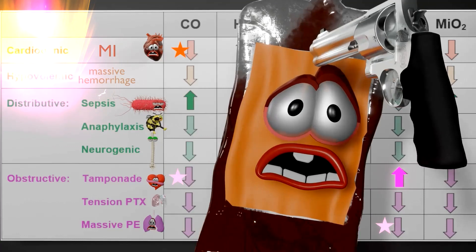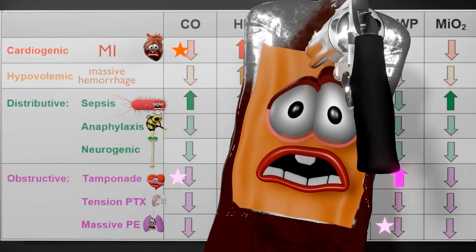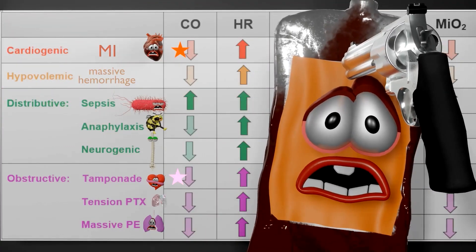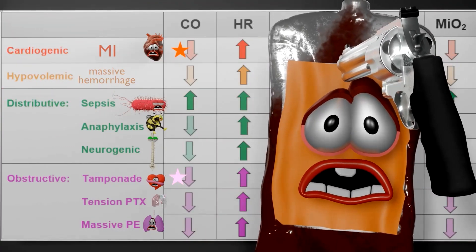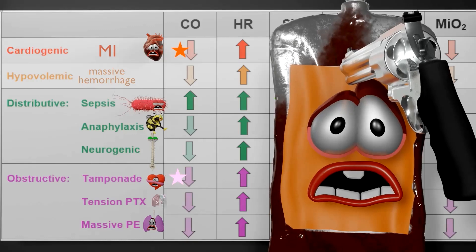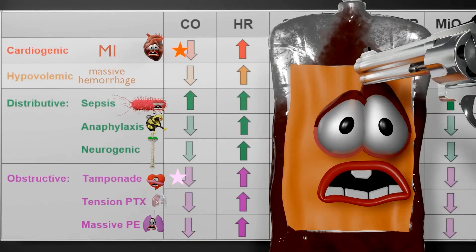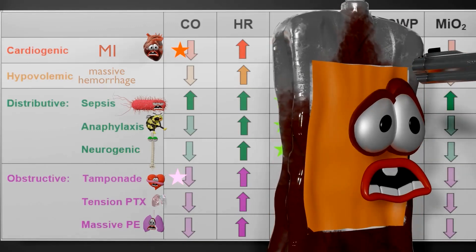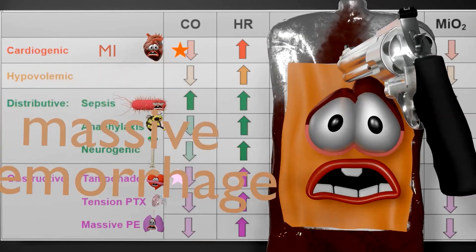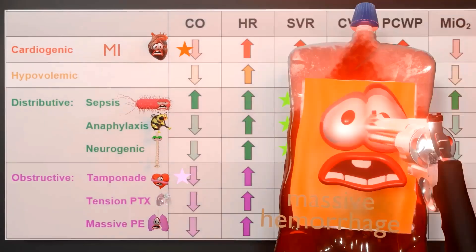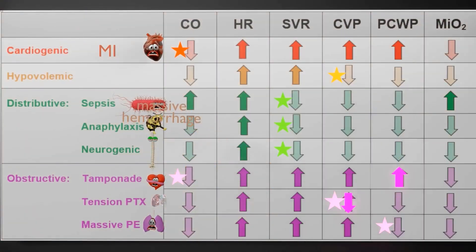Next, hypovolemic shock. This is not a problem intrinsically with the heart — there's just not enough fluid in the body. For example, which we often see in the emergency room, there's loss of fluid due to hemorrhage — a person got shot and now has reduced fluid in his body. Other causes may be diarrhea, vomiting, and dehydration, as well as other etiologies.